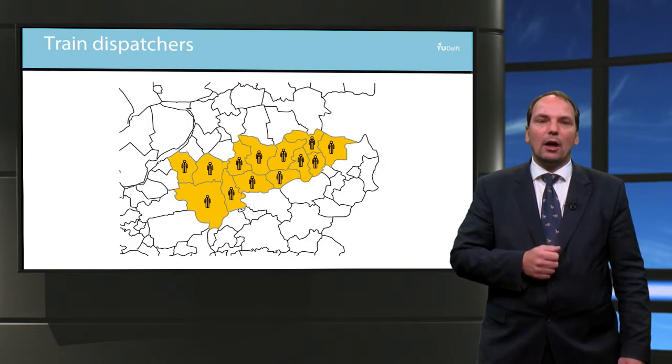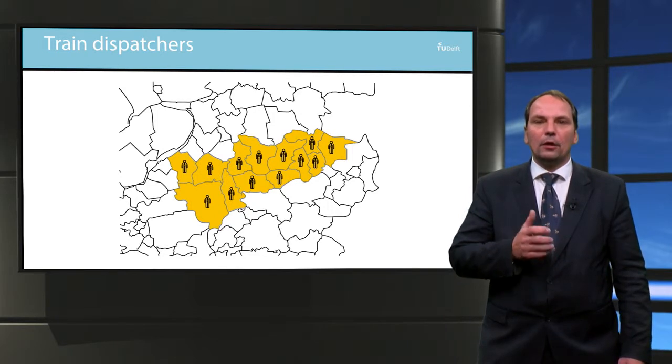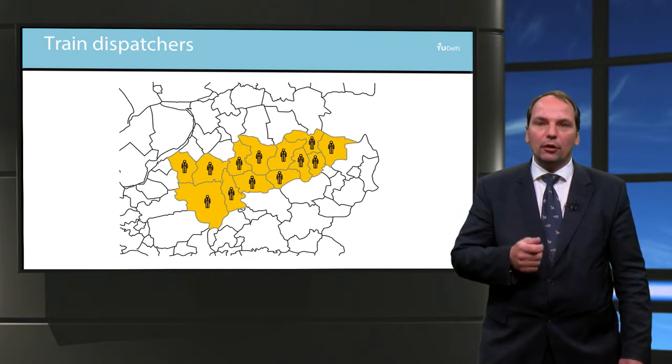Train dispatchers are responsible for the safe movement of train traffic in a designated area. Train traffic is regulated by operating signals and switches and reserved roadways for particular trains.